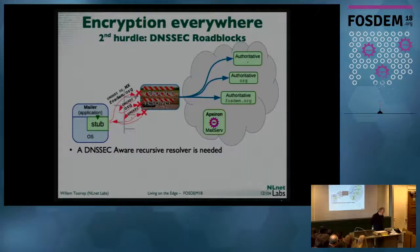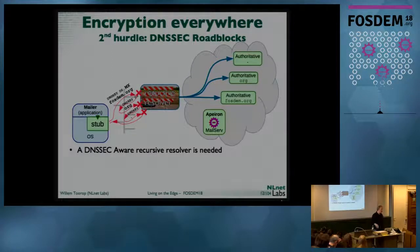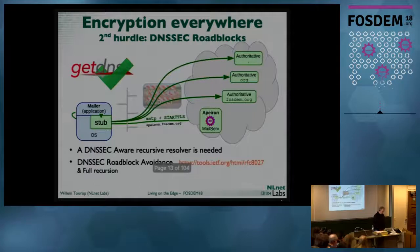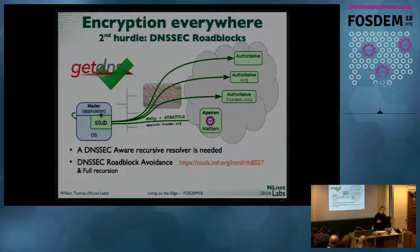The second hurdle is DNSSEC roadblocks. Middle boxes — especially customer premise equipment — have forwarding resolvers which really break DNSSEC in various ways. Luckily, RFC 8027 defines how to deal with that. Ultimately, the stub resolver has to be able to fall back to full recursion, and GetDNS can do that.